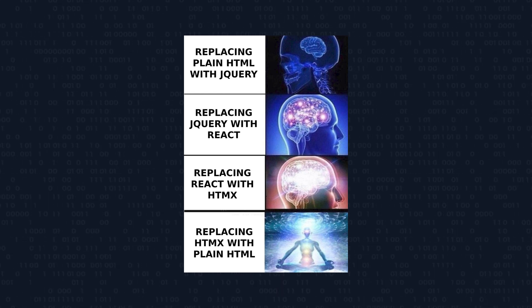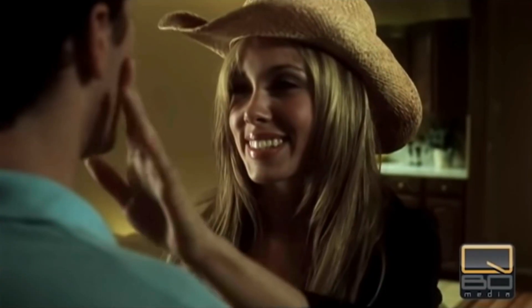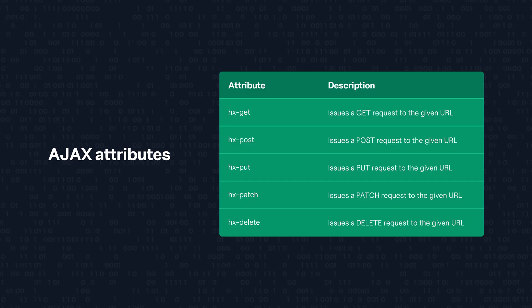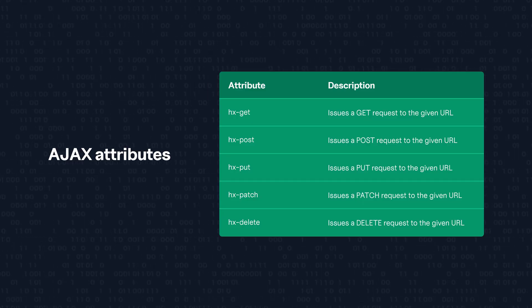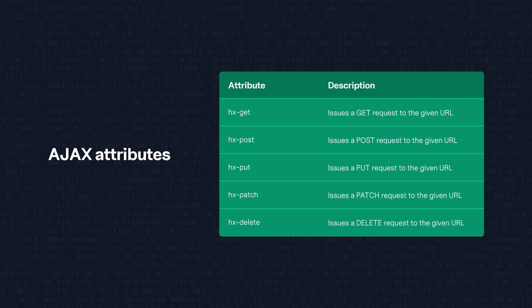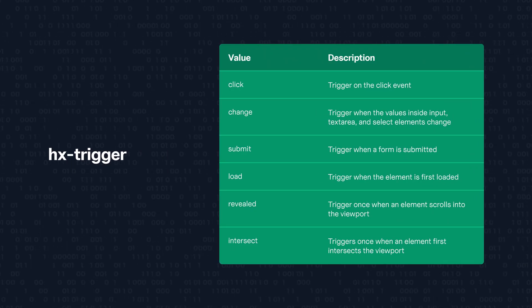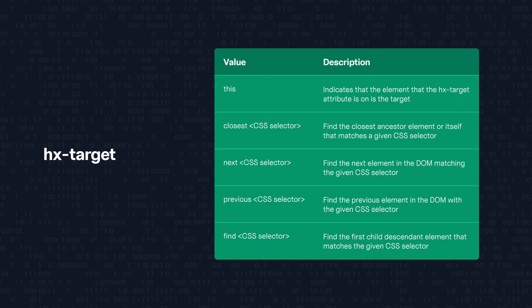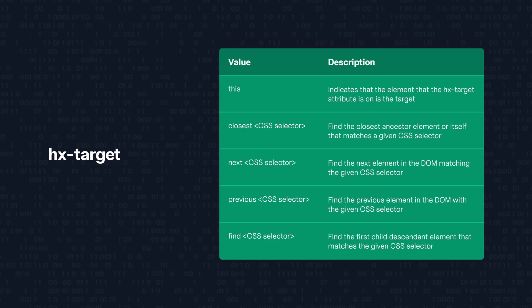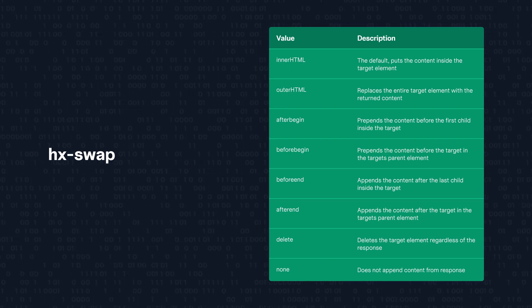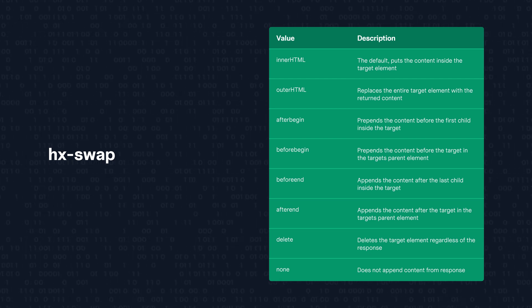HTMX does all of this directly from HTML elements. It achieves this by using distinct HTML attributes: AJAX attributes for handling requests, trigger attributes for handling which event will cause the request, target attributes for handling what elements should load the response, and swap attributes for handling how the HTML is swapped in the target element.